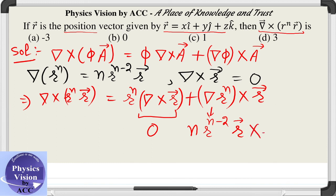R vector cross r vector, and this r cross r also gives you a 0. Hence the result to this question is option B, which is 0.